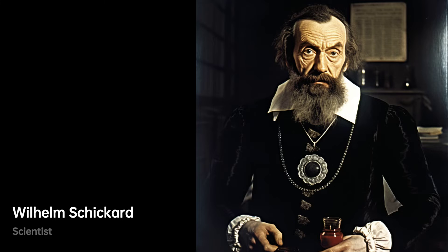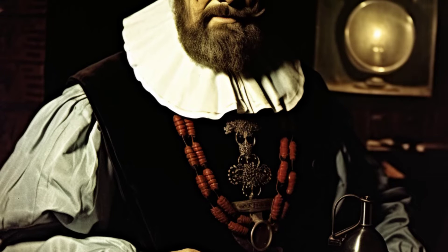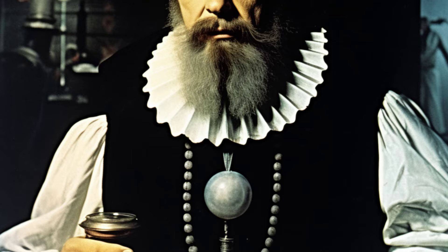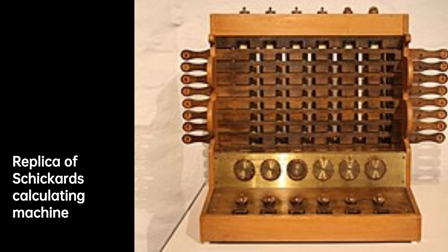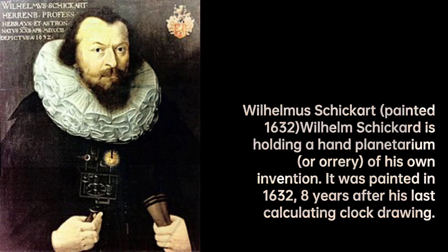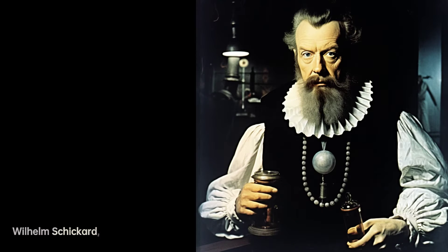He is known as a German professor of Hebrew and astronomy who gained fame in the 20th century, recognized for his groundbreaking design of the first direct entry calculating machine in the 17th century. His name is Wilhelm Schickert. In the realm of scientific inventions, there are names that stand out for their profound impact — one such legendary figure is Wilhelm Schickert, a German professor of Hebrew and astronomy, whose contributions to the world of calculating machines cannot be overstated.